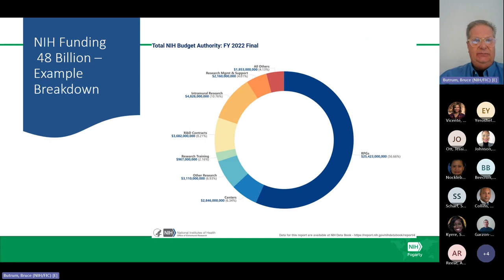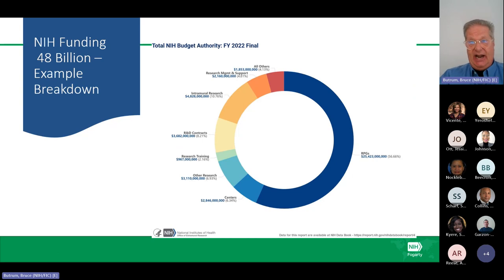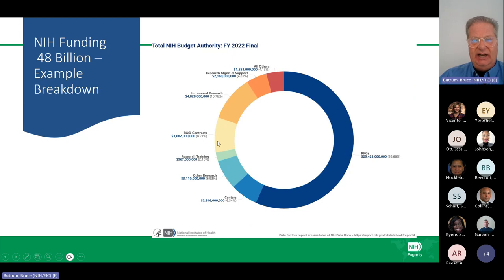This slide shows the breakdown of the NIH budget, which is currently about $48 billion, based on the 2022 final budget. Research management and support is about 4.81%, covering NIH staff, buildings, and administrative infrastructure. Intramural research is about 10.76%. R&D contracts make up about 8.21%. The remaining amount—almost 80% of the budget—is in grants. NIH is predominantly a granting organization.